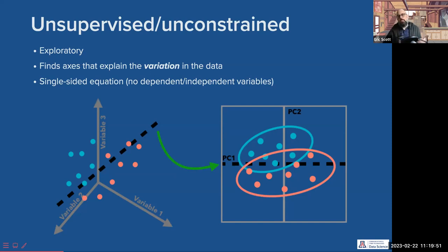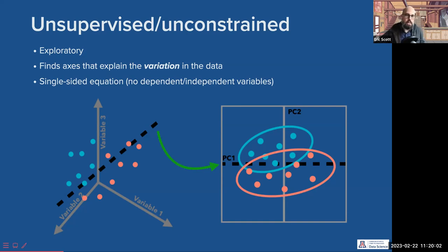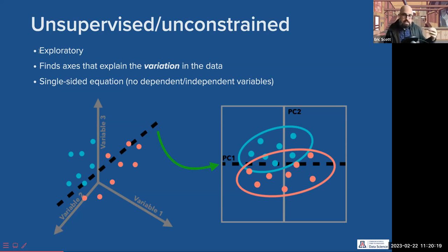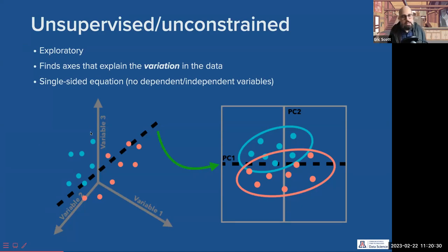One way we can divide multivariate analyses is by unsupervised versus supervised — this is the thing I mentioned at the beginning that I want to drive home. Unsupervised analyses, which are also called unconstrained analyses in community ecology, are exploratory. They find axes that explain the variation in the data, and we can think of these like a single-sided equation — there's no dependent or independent variables, there's just the data.